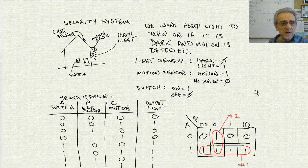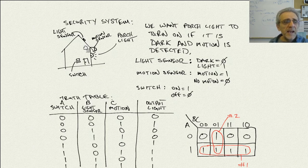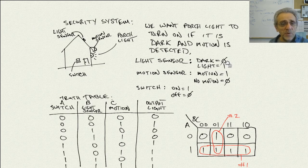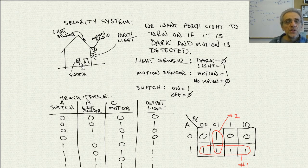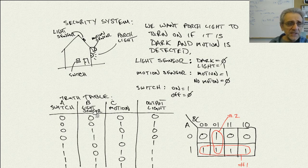Our second example is a Karnaugh map of a security system. We have a home with a light sensor on top which turns on — returns true — when there is light in the daytime, and returns zero at nighttime when it's dark. There's also a motion sensor that returns true if there's motion and zero if there is no motion. There is also a switch inside the house which can turn on the light — that's the output. So we have three inputs: A is the switch inside the house, B is the light sensor on the roof sensing day or night, and C is the motion sensor.